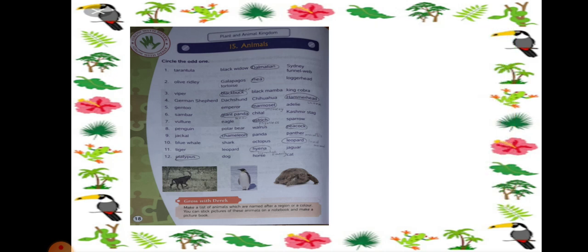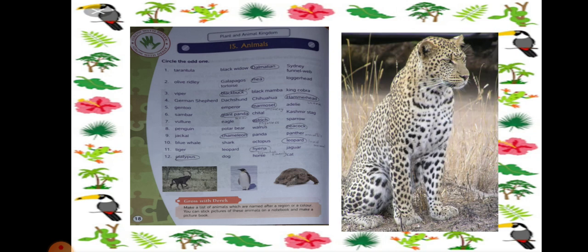Number 10: Blue Whale, Shark, Octopus and Leopard. So Leopard is the odd one out here because the rest are all water animals. You can see Leopard is odd one out here. So Leopard should be circled.